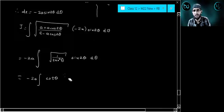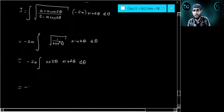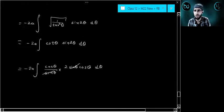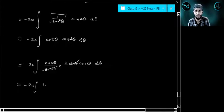Sin 2 theta you can write as 2 sin theta cos theta to simplify. So 2a times integration of cos square theta d theta.